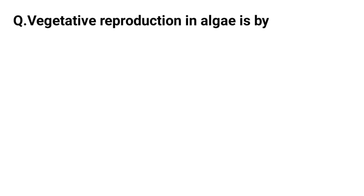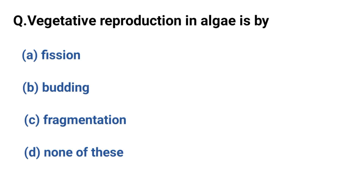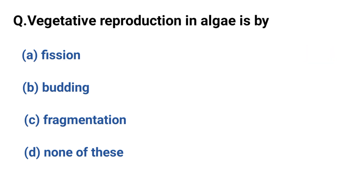Vegetative reproduction in algae is by. Correct option is option C: Fragmentation.